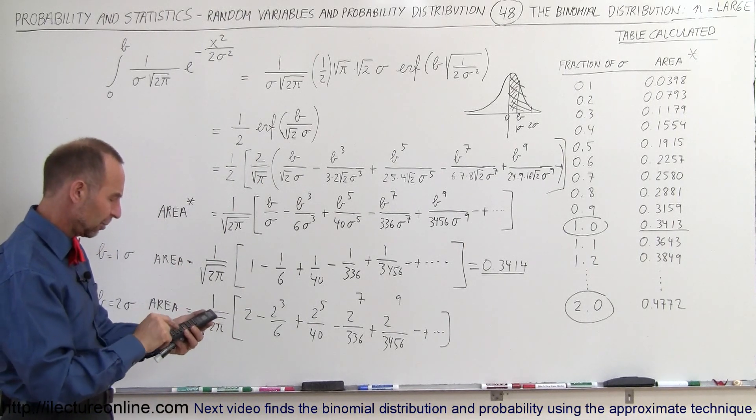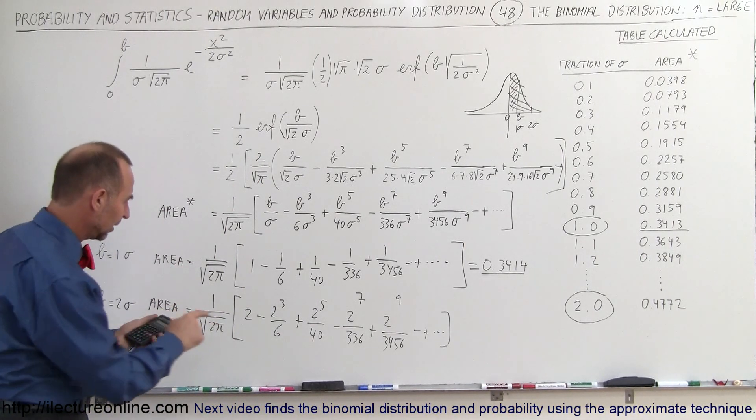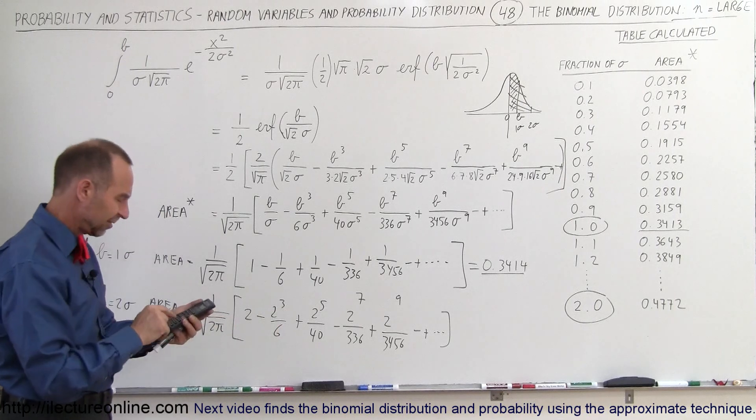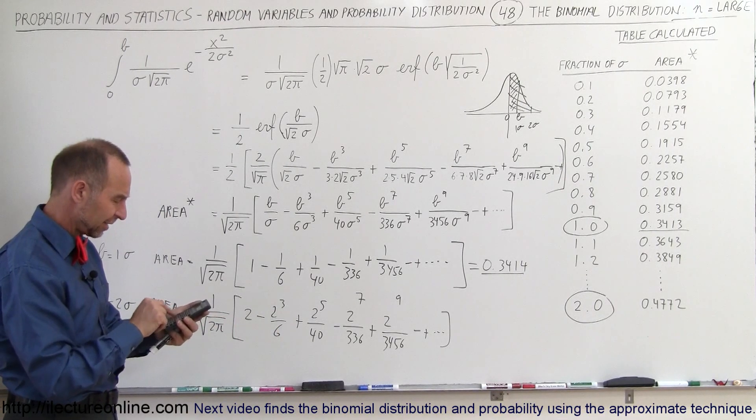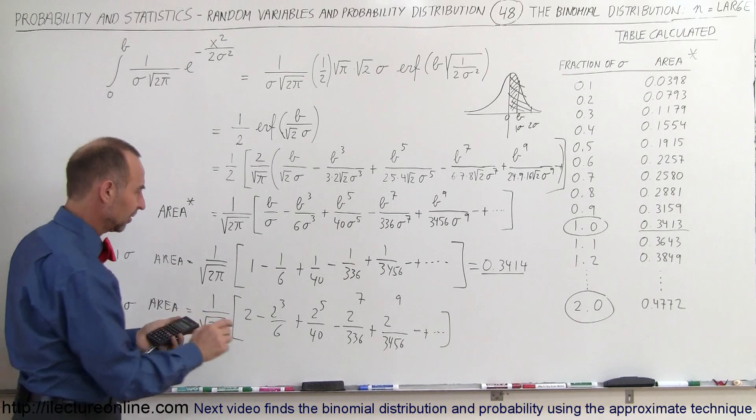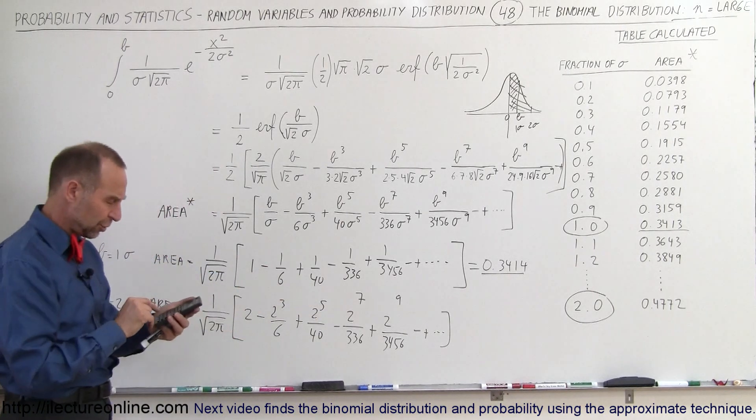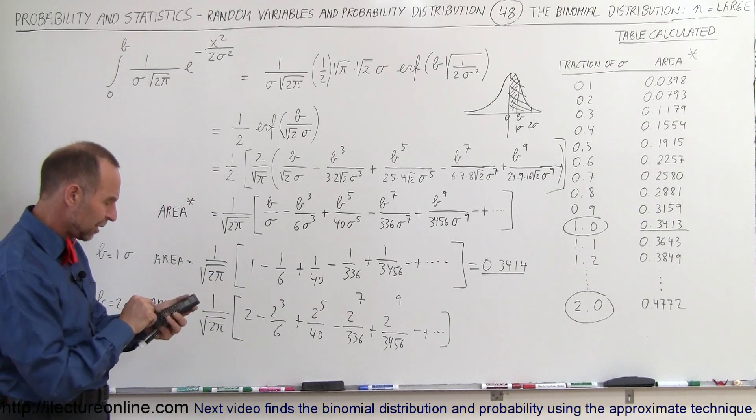So, starting from here, we have two minus, that would be eight divided by six, plus, two to the fifth power is 32, so that would be 32, divided by 40.